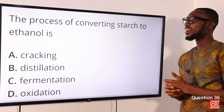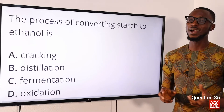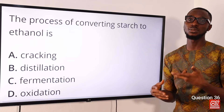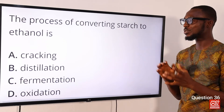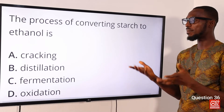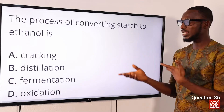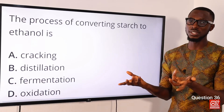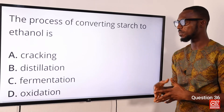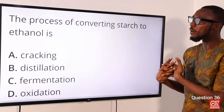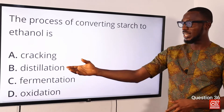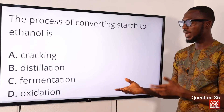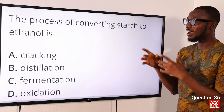Question 36: The process of converting starch to ethanol is what? That process is fermentation — the slow decomposition by microorganisms, specifically yeast, whereby larger molecules like starch are broken down into smaller molecules like ethanol. Raw materials containing starch or sugar produce alcohol due to the presence of yeast. The correct option is option C for fermentation. Cracking refers to petroleum; distillation is a separation technique.